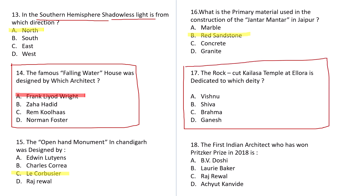Question number 18: The first Indian architect who won the Pritzker Prize in 2018 is: B.V. Doshi, Laurie Baker, Raj Rewal, or Achyut Kanvinde. The correct answer for this is B.V. Doshi, who won the Pritzker Prize in 2018.